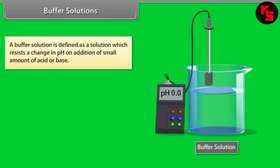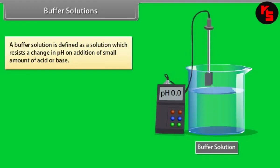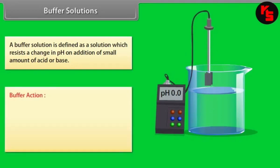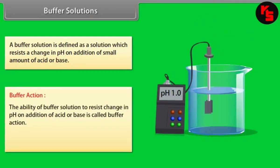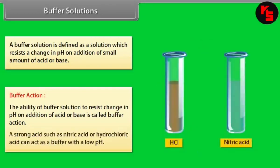Buffer Solutions. A buffer solution is defined as a solution which resists a change in pH on addition of a small amount of acid or base. The ability of a buffer solution to resist change in pH on addition of acid or base is called buffer action. A strong acid such as nitric acid or hydrochloric acid can act as a buffer with a low pH.